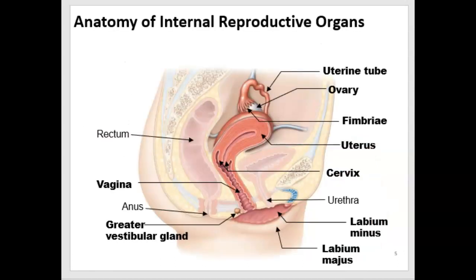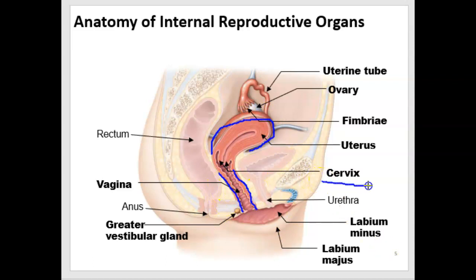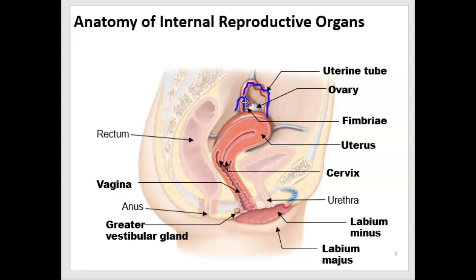Now let's look at the anatomy of the internal reproductive organs that are considered accessory organs. We have the vagina, and then the uterus. The opening to the uterus is called the cervix — the tip of the uterus that extends into the vagina. The uterine horns, also called uterine tubes or fallopian tubes, end in a finger-like structure with projections called fimbriae, which help propel an oocyte released from the ovary into the fallopian tube.